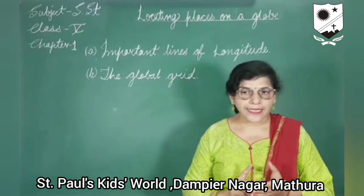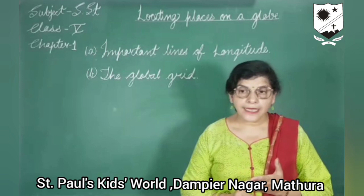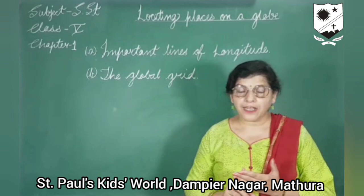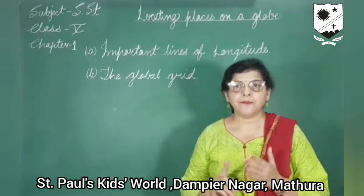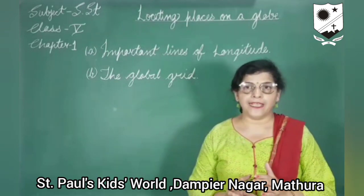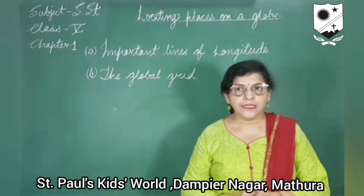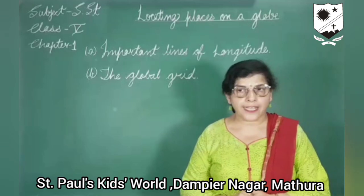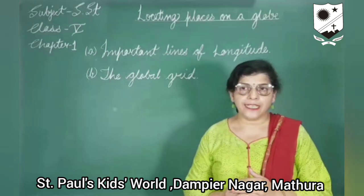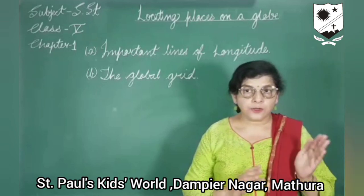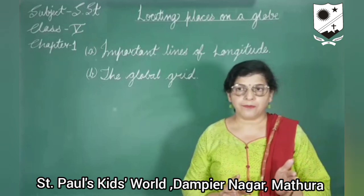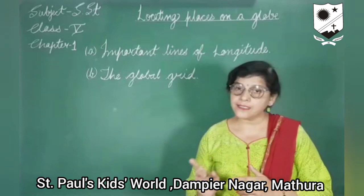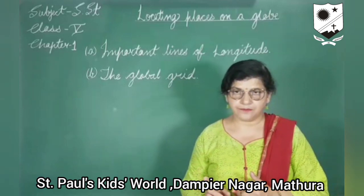Number three is IDL, or International Date Line. It roughly follows the 180 degree longitude. The line marks the place where the calendar date changes from one date to the next. For example, if it is October 20th to the west of the IDL, then it will be October 21st to the east of the IDL.